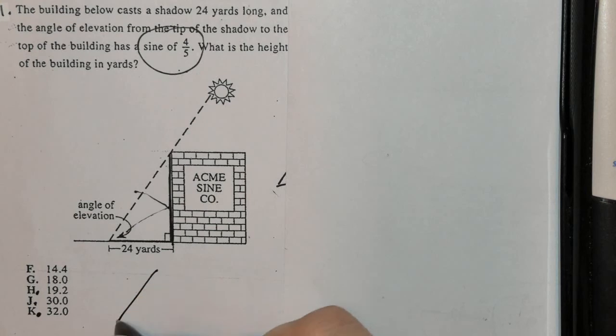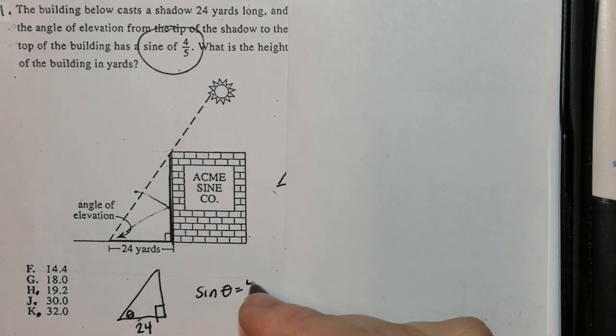So I'm going to go ahead and draw that triangle. Right triangle here, I know this is 24. Now I'm told that the sine has a ratio of 4/5, so the sine of the angle of elevation here is 4/5. That means the sine of this unknown angle is 4/5.